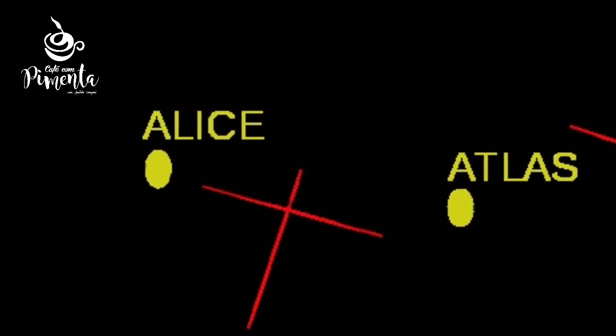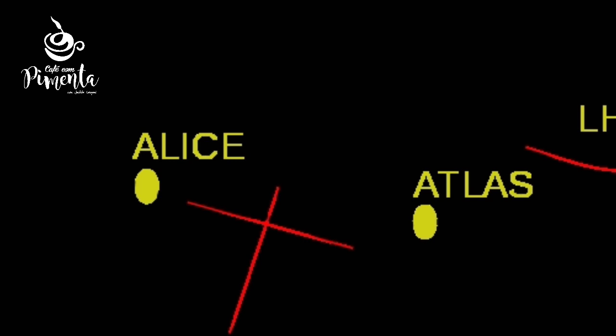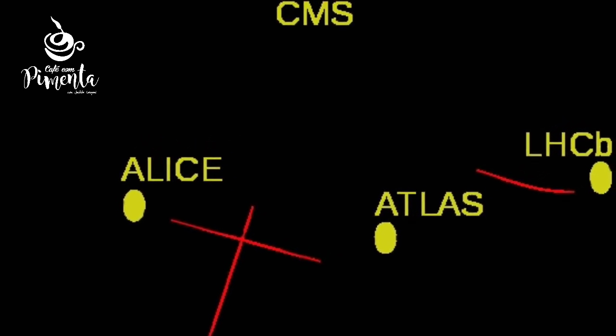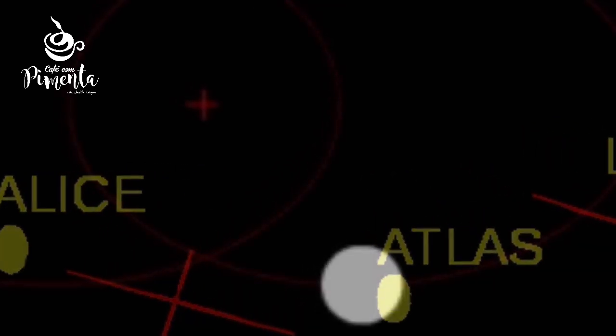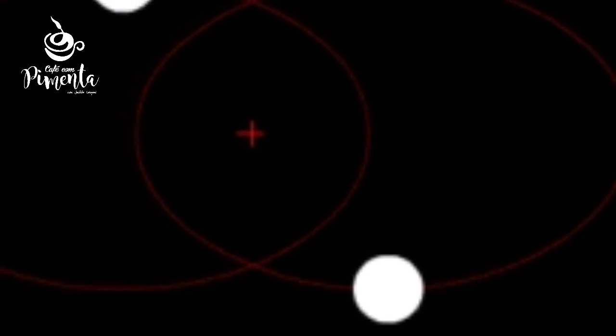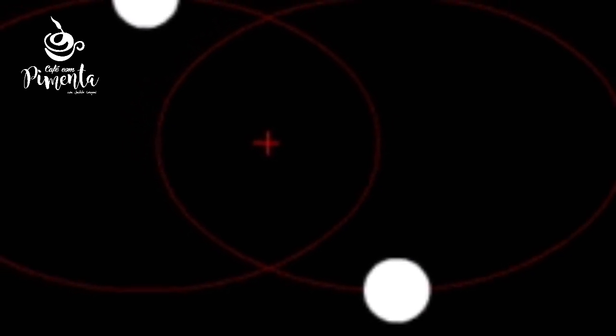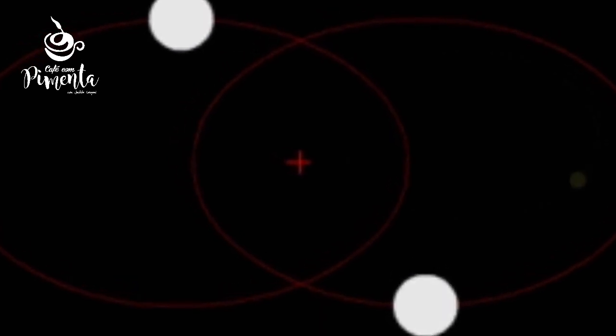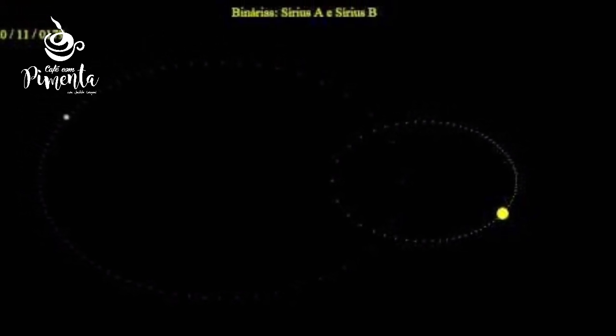Na definição moderna, o termo sistema binário é geralmente restrito a pares de estrelas que orbitam um centro de massa comum. Estrelas binárias que podem ser identificadas visualmente com um telescópio ou via métodos de interferometria são conhecidas como binárias visuais. As estrelas componentes da maior parte das binárias visuais conhecidas ainda não completaram uma revolução completa desde sua descoberta, embora tenham claramente se movido ao longo de um trajeto curvo ou arco parcial.